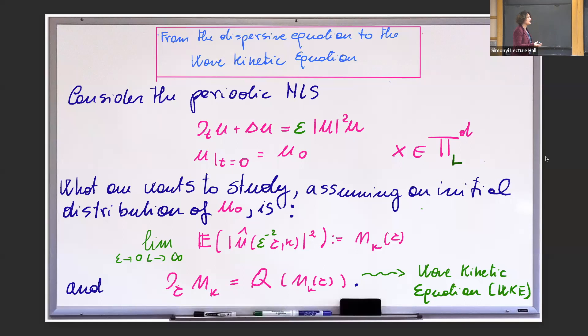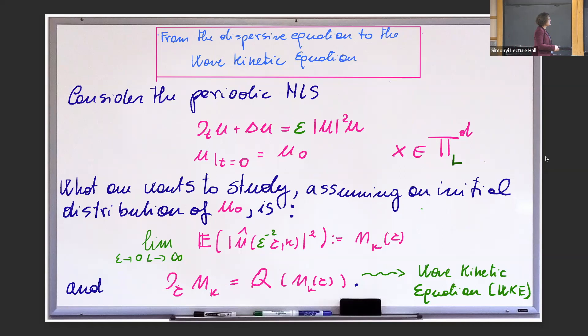More than that, since this is going to be, as I mentioned in the general description of turbulence, there's going to be a probability underlying. Just think about taking initial data which are random. There is a probability in the background. That's why what you're really looking at is the expectation of the size of the Fourier coefficient squared. And there is an important parameter: the time epsilon to the minus two, called the kinetic time. What you want to learn is what happens as you take first L to infinity and then epsilon to zero.